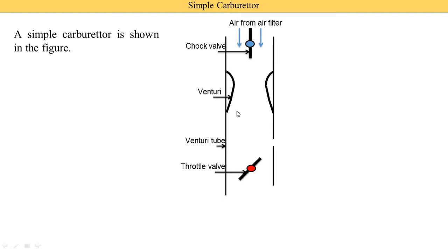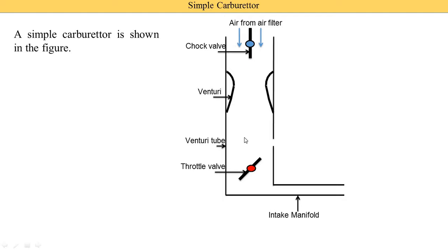You can also draw the venturi tube horizontally — then the air is flowing from the left side to the right side, and it is known as the side or horizontal draft carburetor. From the throttle valve, the mixture is supplied to the intake manifold and then supplied to the engine.